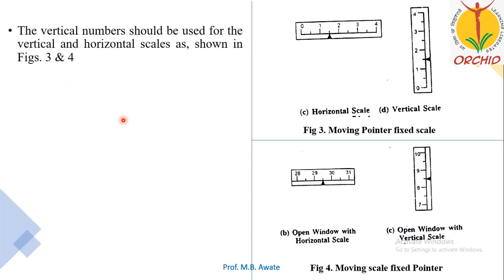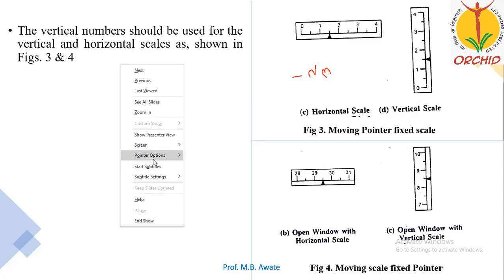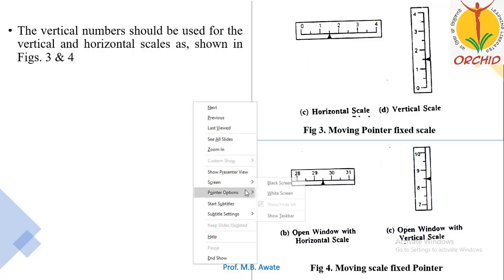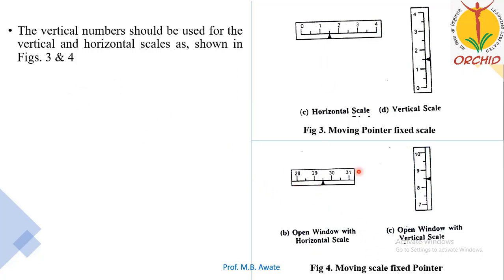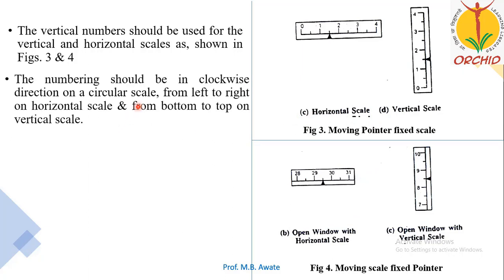Vertical numbers should also be used for vertical and horizontal scales — numbers should be vertically aligned, not written horizontally. The numbering should be done clockwise for a circular scale, from left to right on a horizontal scale, and from bottom to top on a vertical scale.